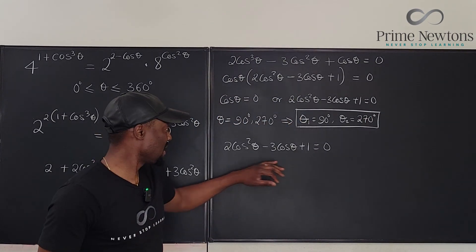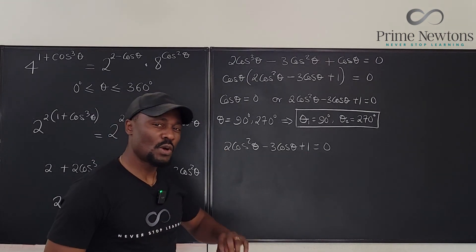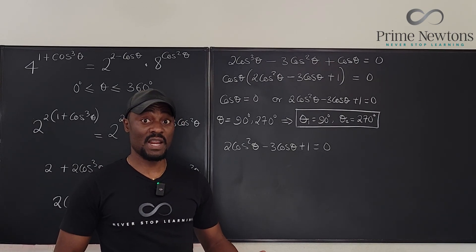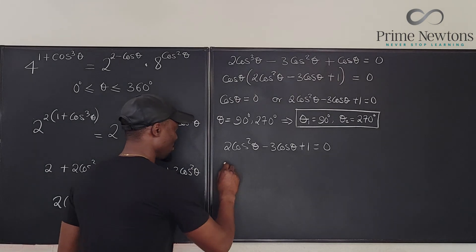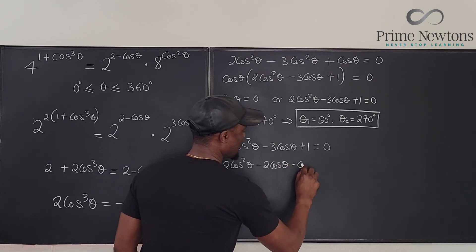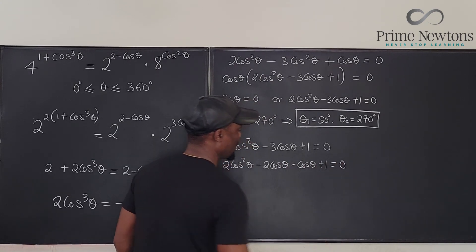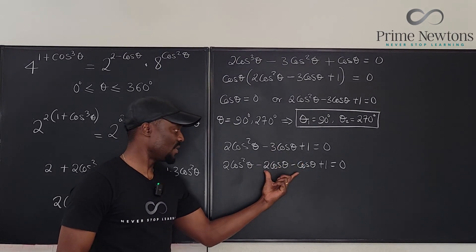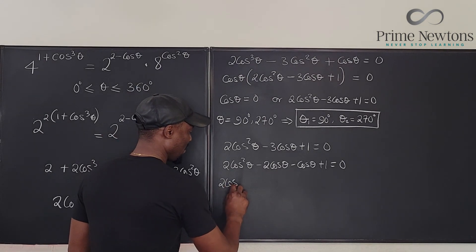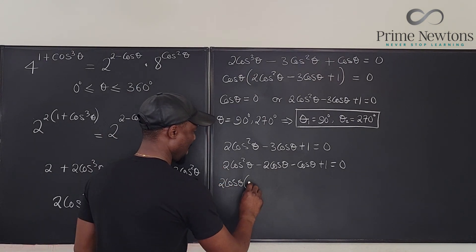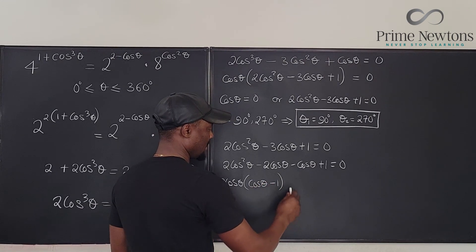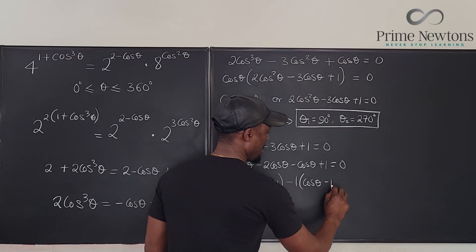To factor 2 cosine²θ minus 3 cosine θ plus 1, I multiply 2 by 1 to get 2, and look for two numbers that multiply to 2 but add to negative 3 — that's negative 1 and negative 2. So I rewrite it as 2 cosine²θ minus 2 cosine θ minus cosine θ plus 1 = 0. Grouping: 2 cosine θ(cosine θ minus 1) minus 1(cosine θ minus 1) = 0.